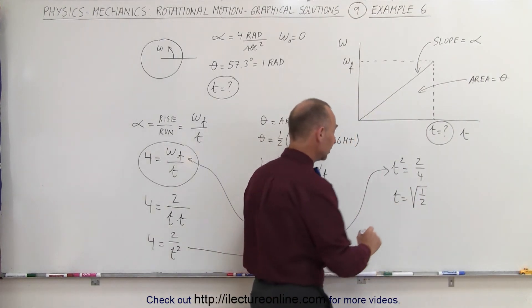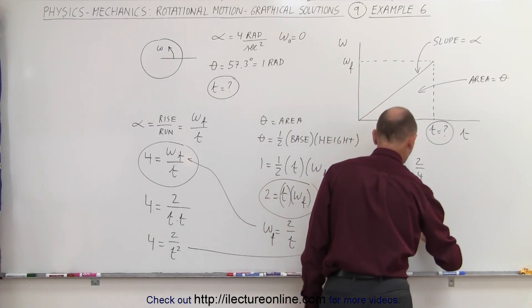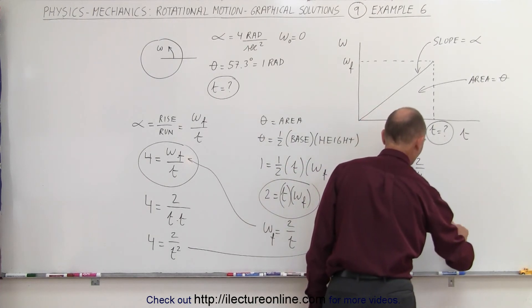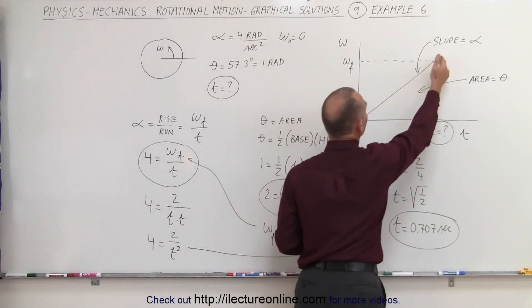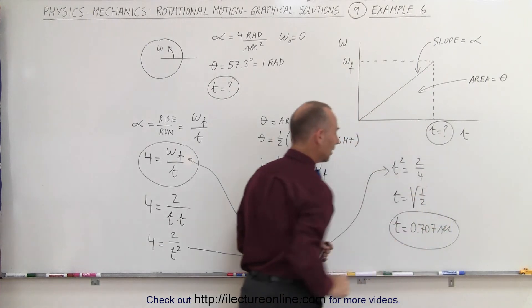And finally, when we plug it into a calculator, we find that t is equal to 0.707 seconds, which is what we're looking for. The time that it took to go from zero to the final omega in this amount of time.